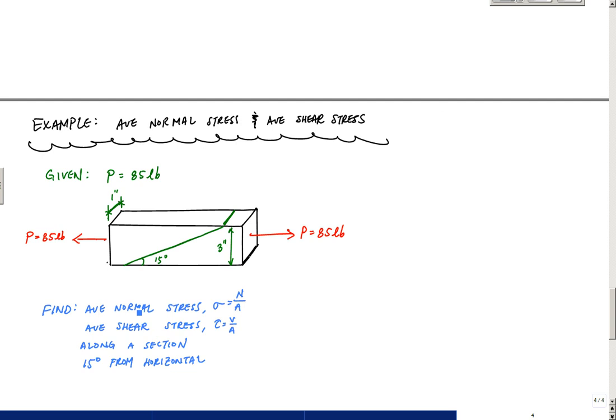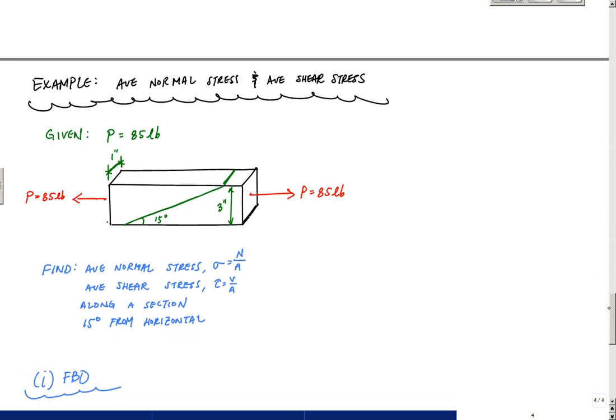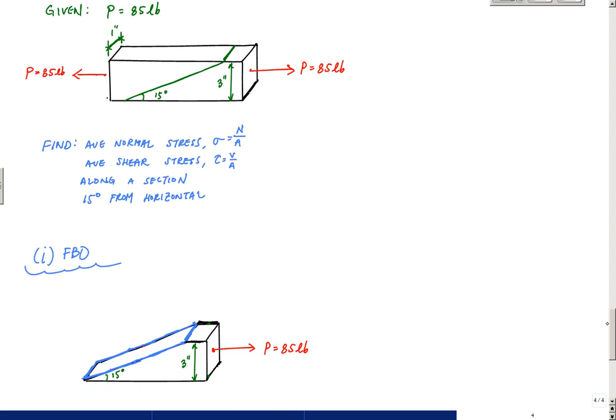And then what we want to do is find this normal stress and shear stress along a 15-degree slice or plane of the structural member and see what those are. And so as you can imagine, one of the first things you need to do is draw a free body diagram.